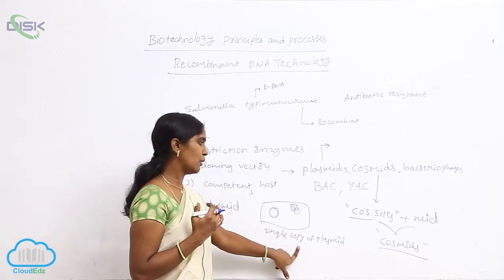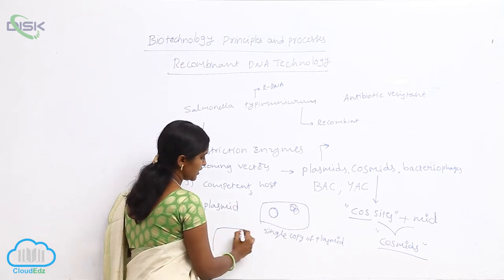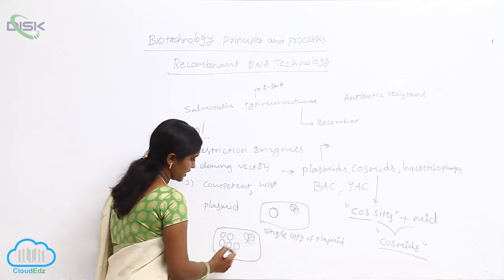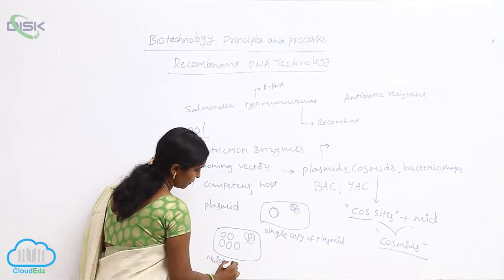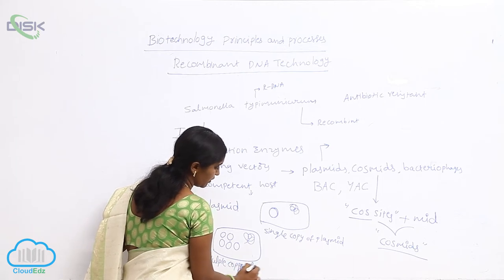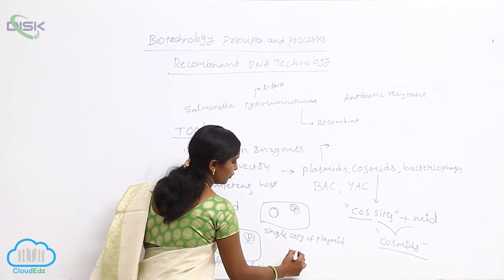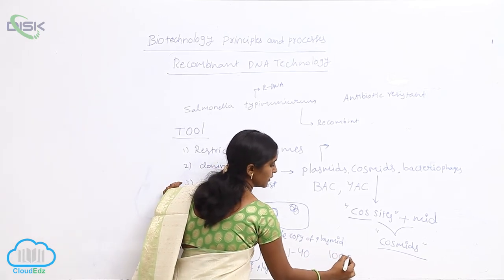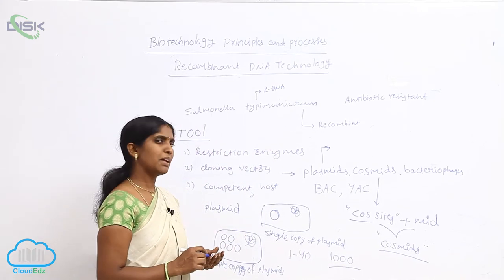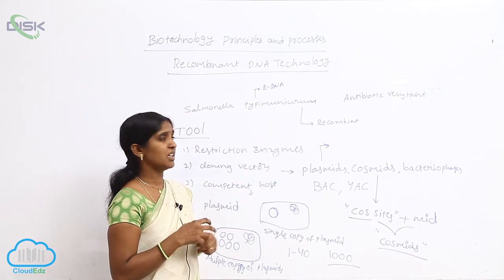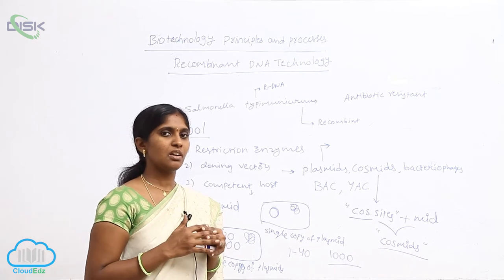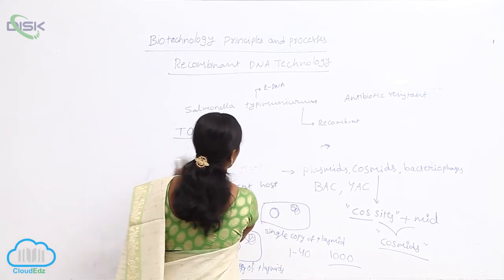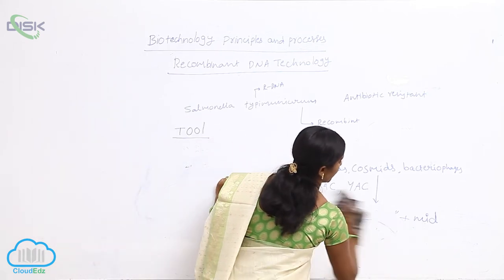Basically, some bacteria have single copy plasmids while some bacteria have multiple copy plasmids — multiple copies of plasmids. Approximately the number ranges from 1 to 40. In adverse conditions, the number of plasmids can reach up to 1000. Both natural plasmids and derived plasmids are used in rDNA technology. The ideal plasmid used in rDNA technology must have certain properties.